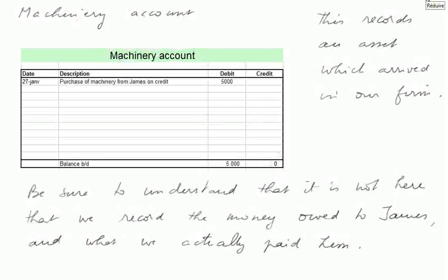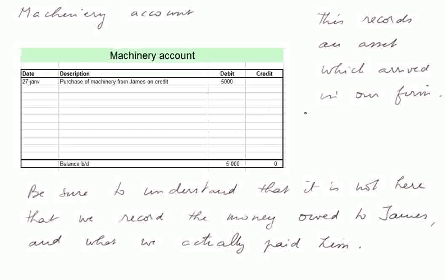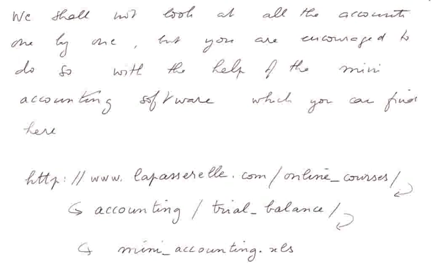The machinery account records an asset — a machine which arrived in our firm. So it's a debit of 5,000 euros, because that's the value of this machine. We bought it from James on credit, and later paid James. Be sure to understand that it is not here that we record the money owed to James — all that takes place in James' account. This is just the account recording that a machine entered our assets. You are encouraged to look at all the accounts using the mini accounting software in the same folder as this page.